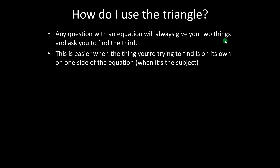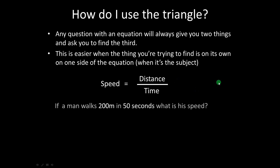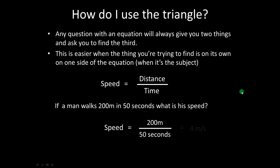The question becomes: how do I use it? Whenever you get a problem in a physics paper with an equation, they will always give you two of the quantities and ask you to find the third. That's easy if you're trying to find the subject of the equation — the thing that's on its own. For example, speed is the subject of speed equals distance over time. If given 200 metres and 50 seconds, you just substitute them in and calculate — 4 metres per second.